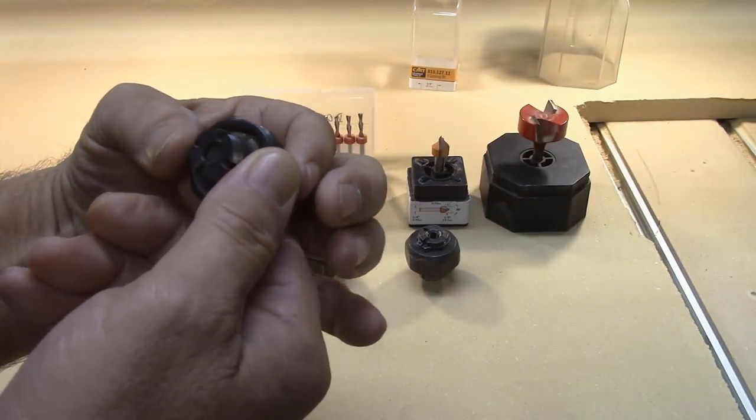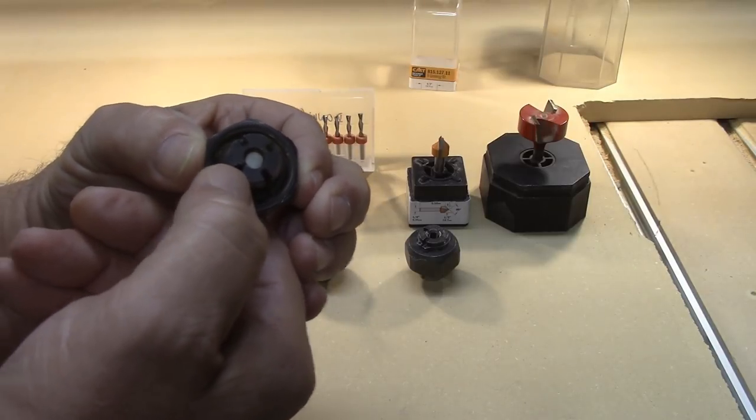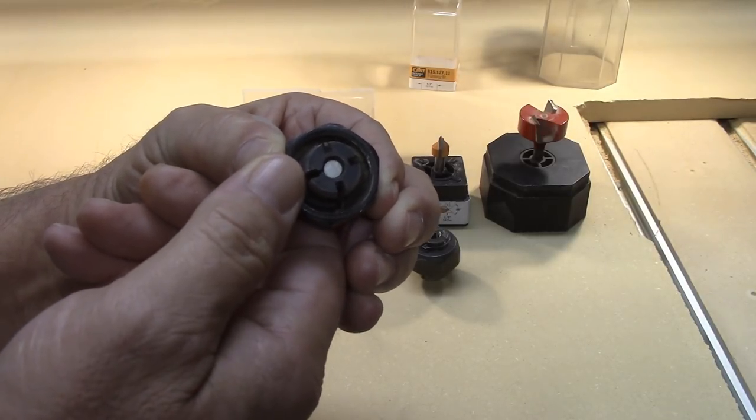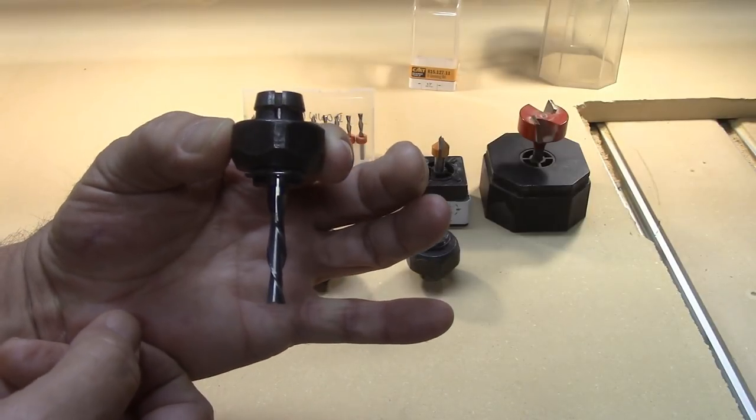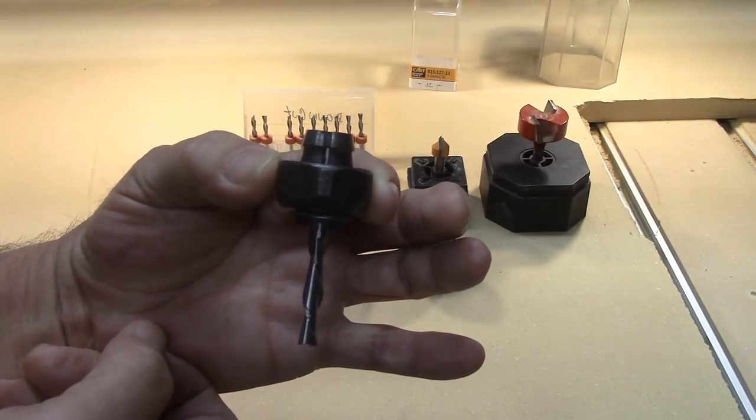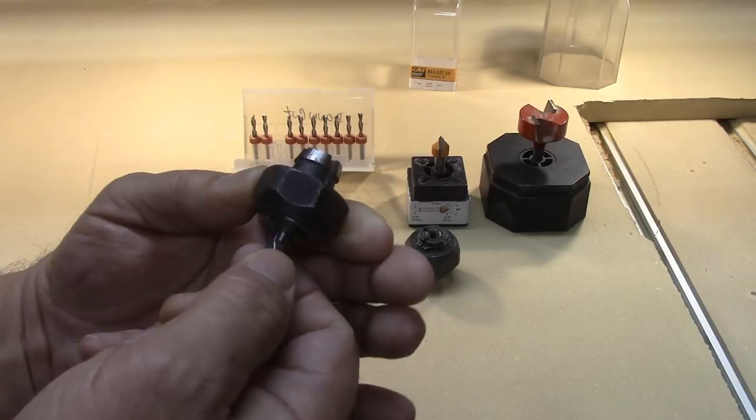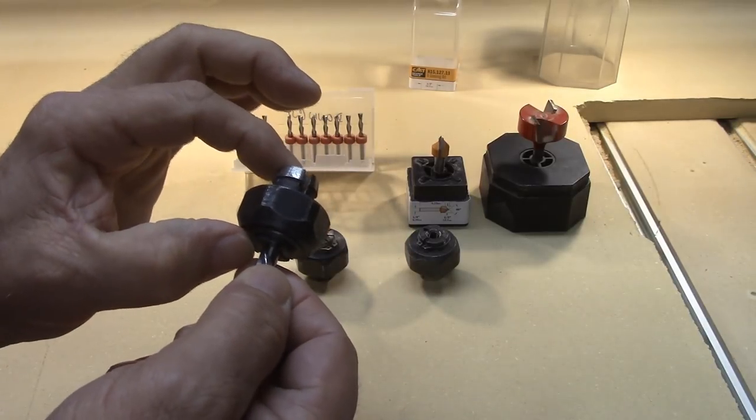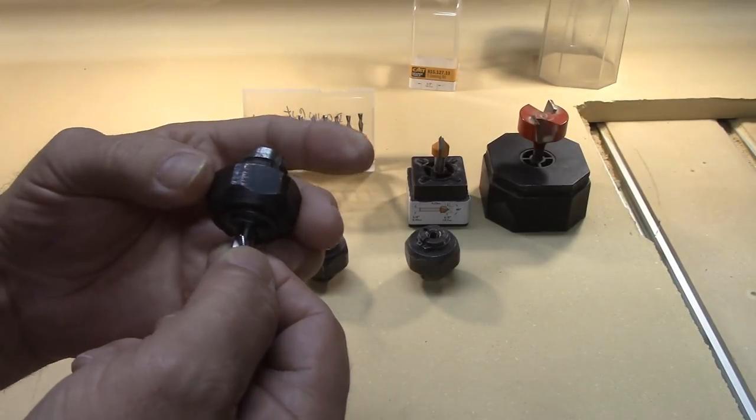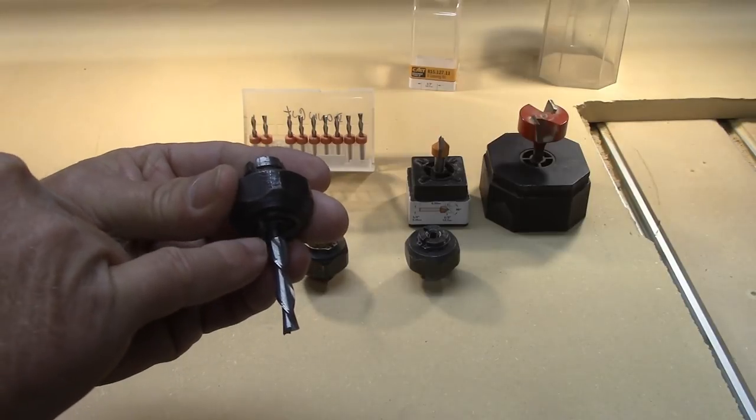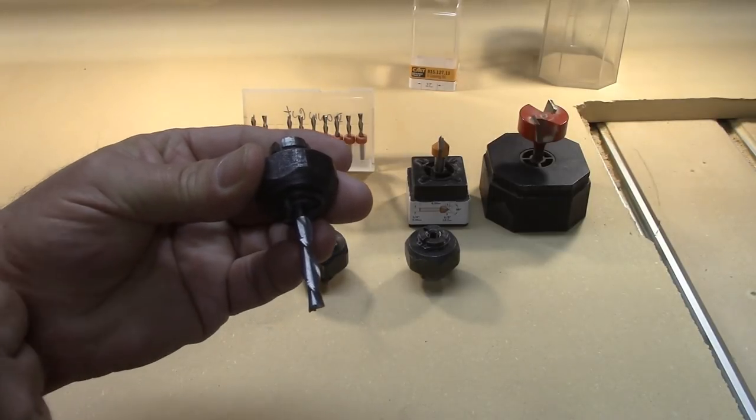Now if I flip it over this way, we can see how much of that shank is buried inside that collet. That's going to give me good sturdy mounting there. Again, we want to get as much of that solid shank up into the collet as possible without that cutting edge slipping into the collet itself.